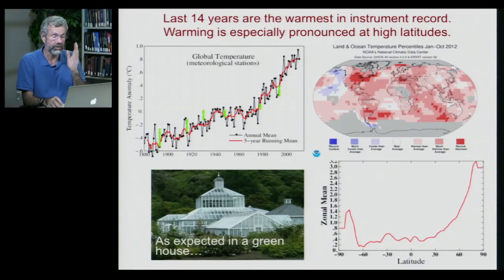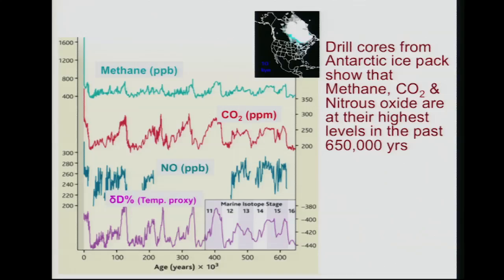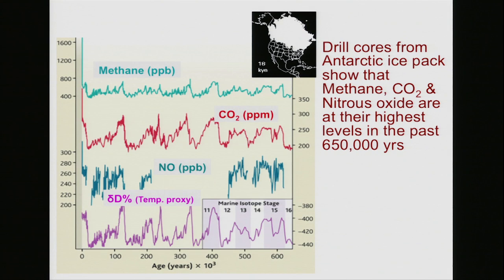If we look at a much longer time series, going back hundreds of thousands of years, we can use the gases trapped in Antarctic ice to measure how much methane, carbon dioxide, and nitrous oxide were in the atmosphere at different times in history. Like carbon dioxide, methane and nitrous oxide also showed cyclical variation through time — there was natural variation.